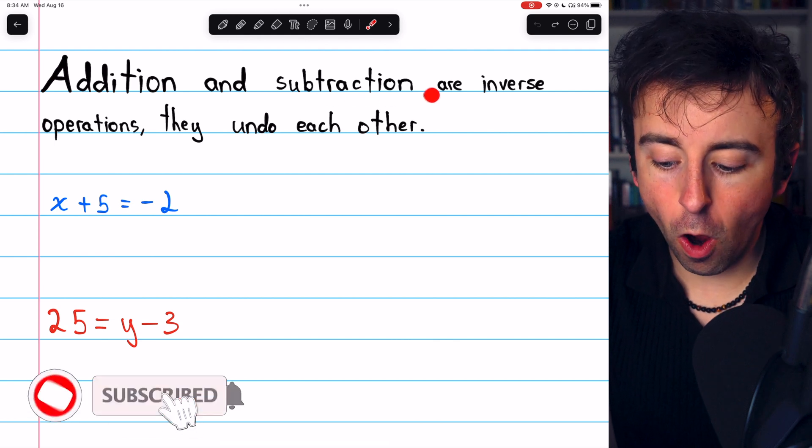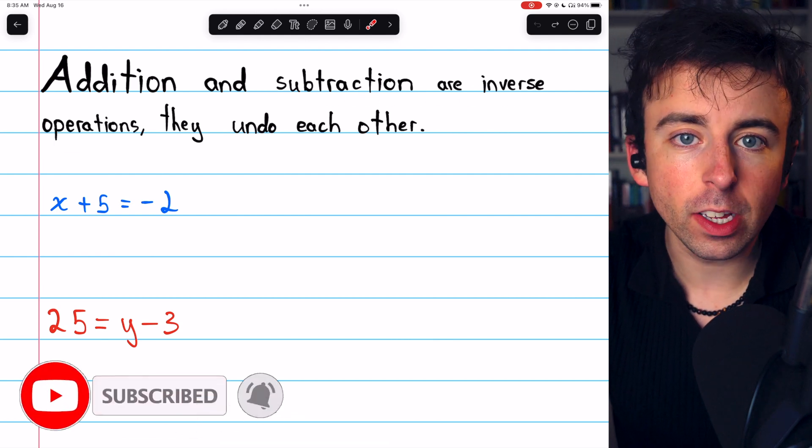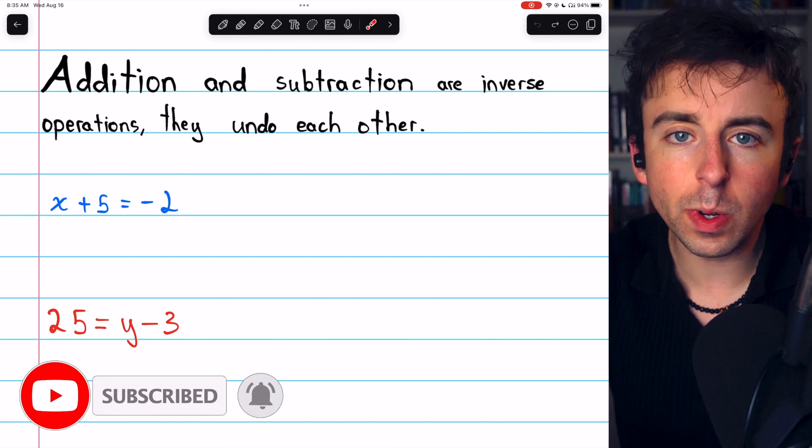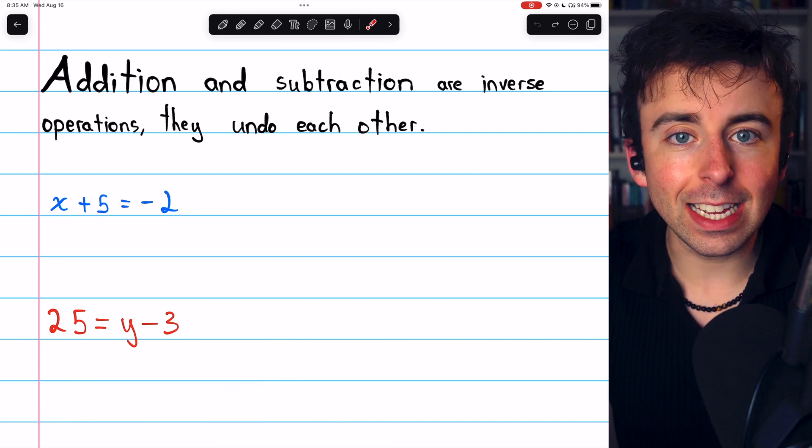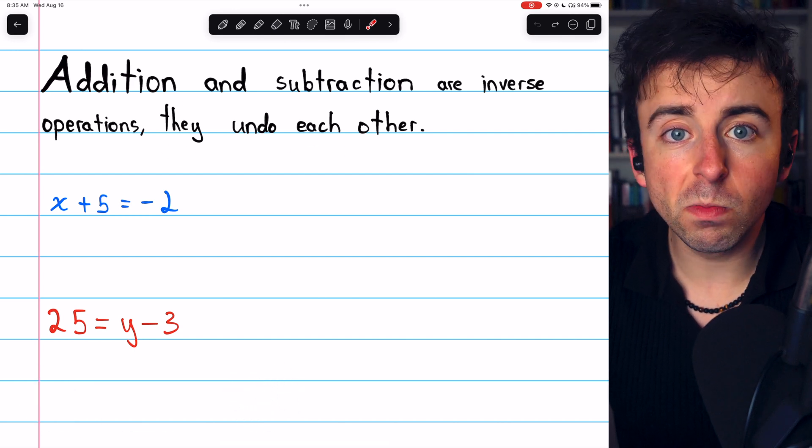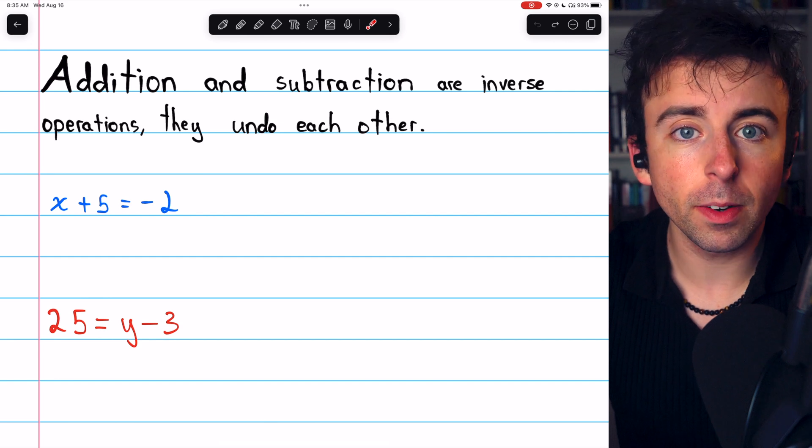Addition and subtraction are inverse operations, which means they undo each other. This makes it very easy to solve an equation using addition or subtraction. For example,